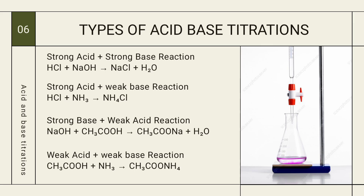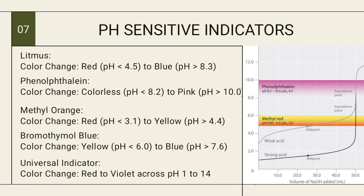Next are pH-sensitive indicators. Litmus paper is most commonly used in laboratories. If the color is red, the solution is acidic at pH 4.5; if blue, the solution is basic at pH 8.3. Above pH 8.3, the litmus paper shows blue color. Moving from acidic to basic, the color changes from red to orange, then yellow, then dark blue. Dark blue indicates basic, while red and shades of red — orange and yellow — indicate acidic strength.